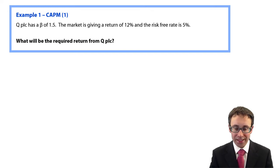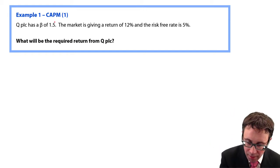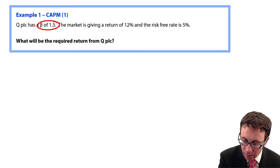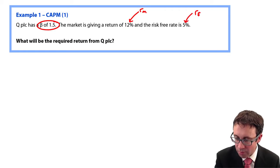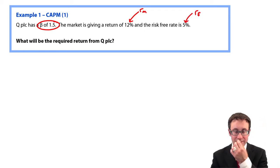Example number one: what would be the required return from Q plc? You've got the beta is equal to 1.5. The market is giving a return of 12%, so that's RM. The risk-free rate is there as 5%.